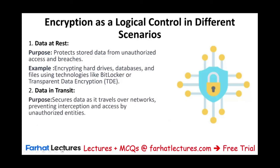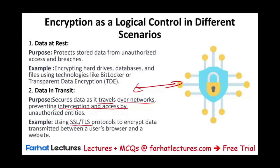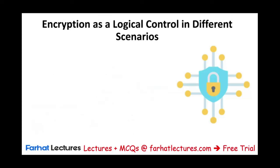Data in transit is when data is going from one network to another, from one person to another. Encryption secures data as it travels over networks, preventing interception and access by unauthorized entities. An example would be using SSL and TLS protocols to encrypt the data. So in case someone intercepts that data, they cannot read it — because it's encrypted.